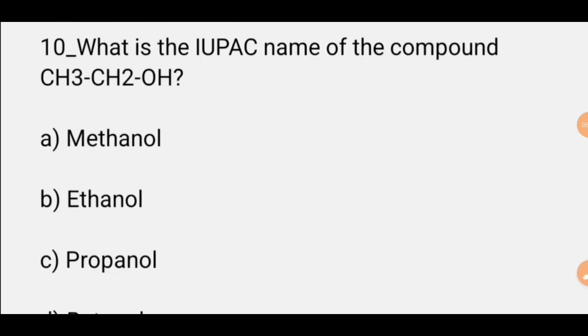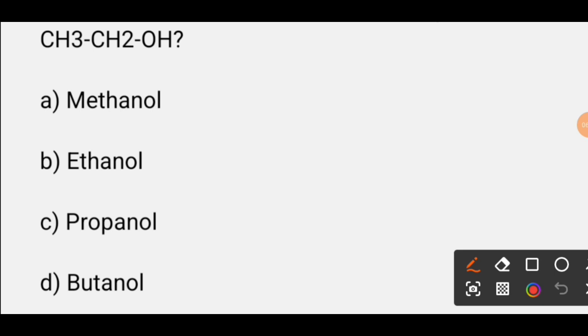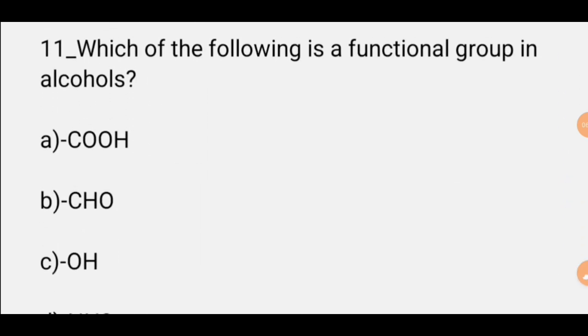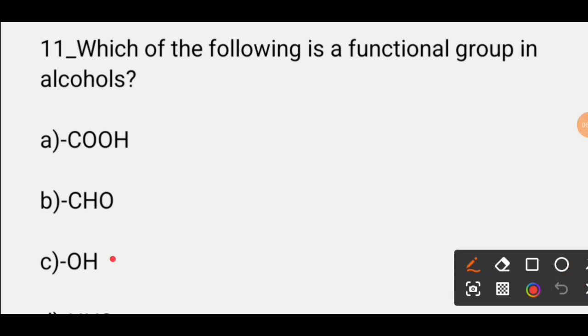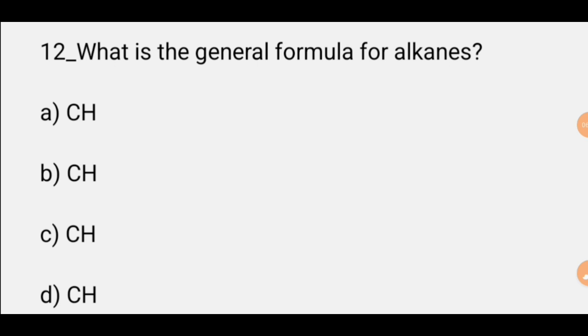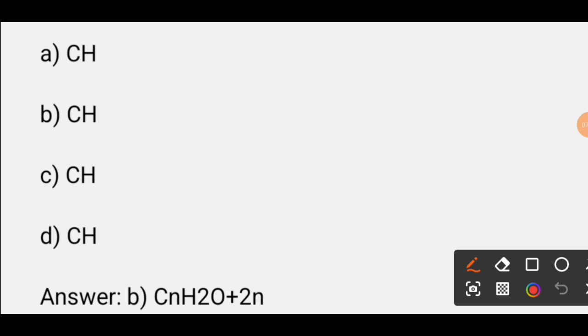MCQ number ten: What is the IUPAC name of the compound? The answer is ethanol. MCQ number eleven: What is the functional group in alcohol? The functional group is OH. MCQ number twelve: What is the general formula for alkane? The formula for alkane is CnH2n+2.